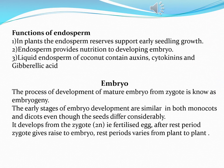Now we focus on the functions of endosperm. First, endosperm reserves support early seedling growth by providing nutrition at the time of seed germination. Second, endosperm provides nutrition to the developing embryo. Third, the liquid endosperm of coconut — coconut water — is made up of endosperm and contains growth hormones like auxin, cytokinin, and gibberellic acid.